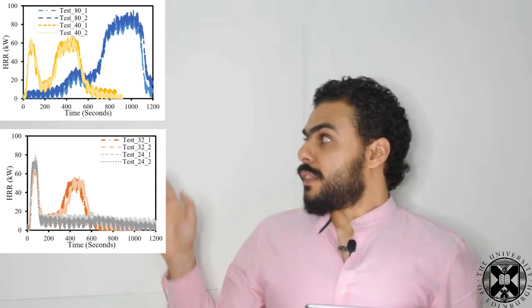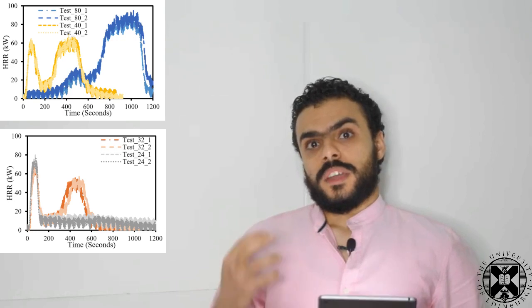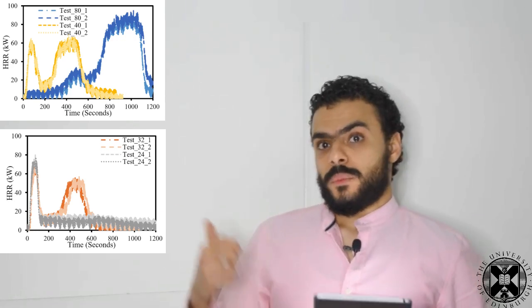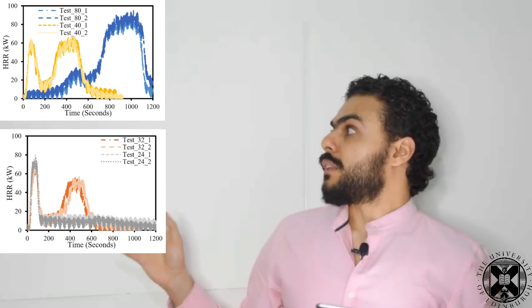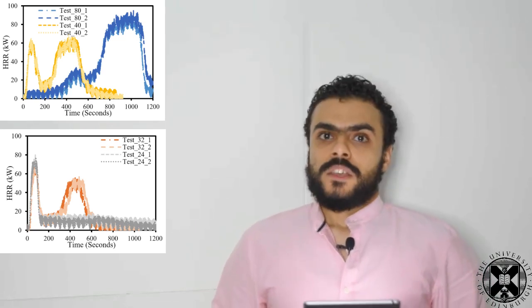But before we actually use this test to validate the FDS, we wanted to make sure that we can repeat the test to check the repeatability of these experiments. So as you can see in this figure, we repeated the four experiments once more and we got almost perfect repeatability for all four cases. So now we are confident with what we did in the experimental work and we can start to use this to validate the FDS model.